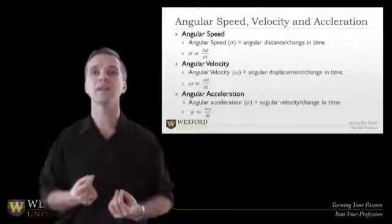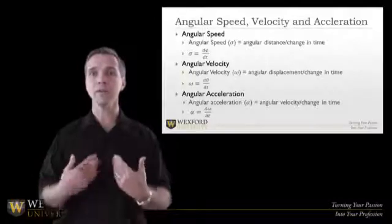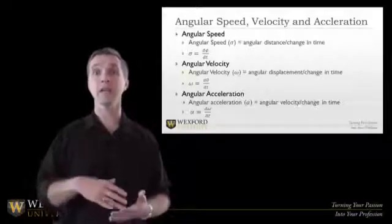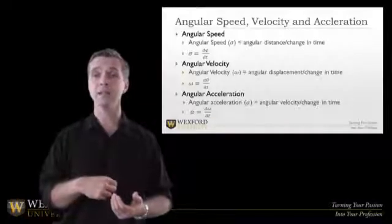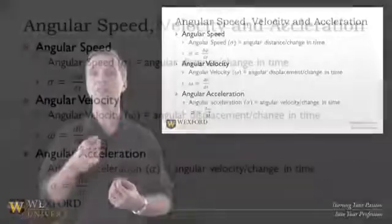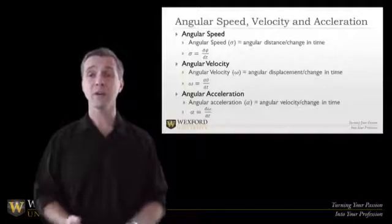We talked about velocity and speed. What is angular velocity? Angular velocity is how many degrees per second of displacement over time. It's angular displacement over time. What's angular acceleration? It's the change in angular velocity over time.